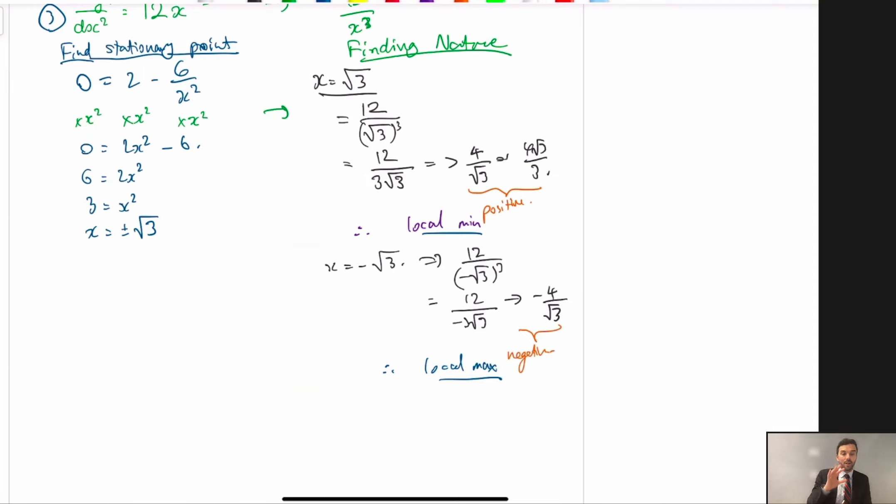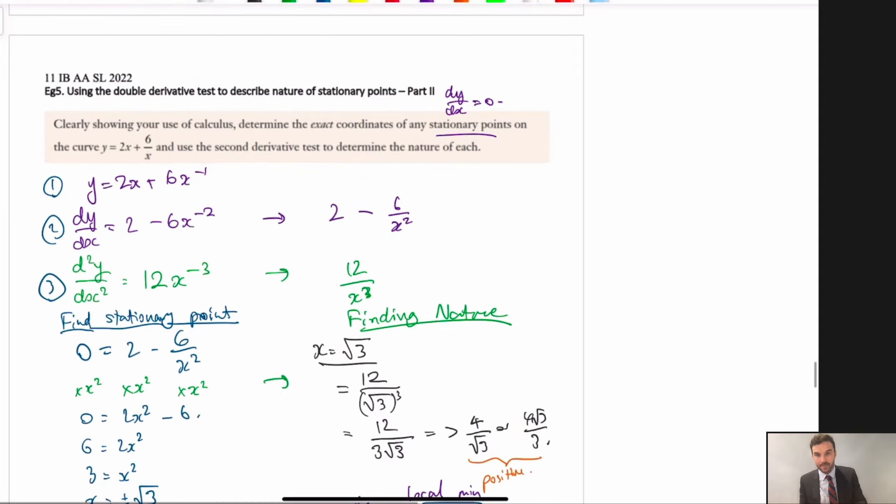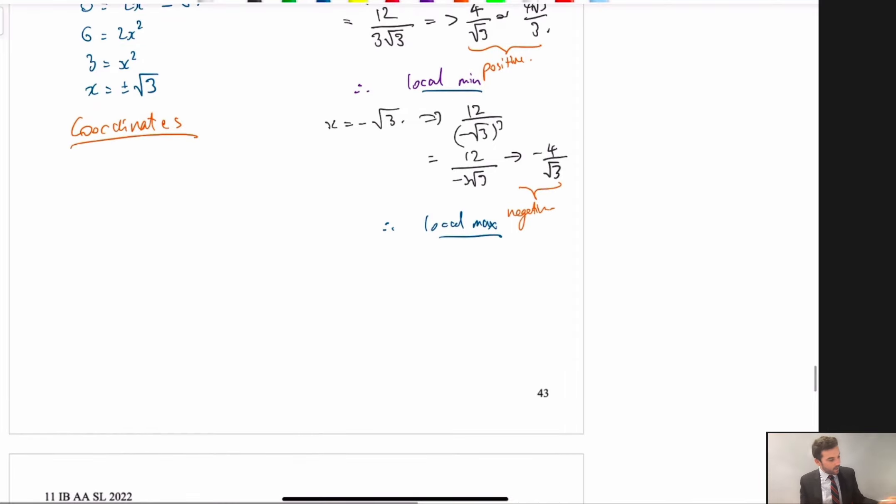So, now, we've found our nature of our points. We've found the stationary points. We just need to find that as a coordinate, okay? And this is going to finish it off, okay? Now, it does say exact coordinates. So, therefore, we have to plug in that positive root 3 and negative root 3 into our original equation, equation 1, okay? So, let's plug that in now.